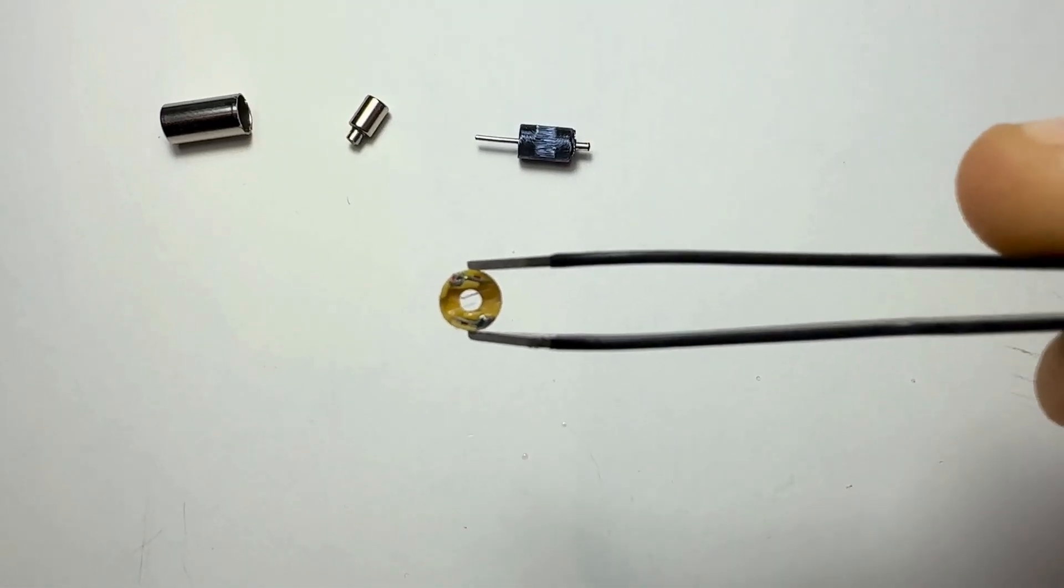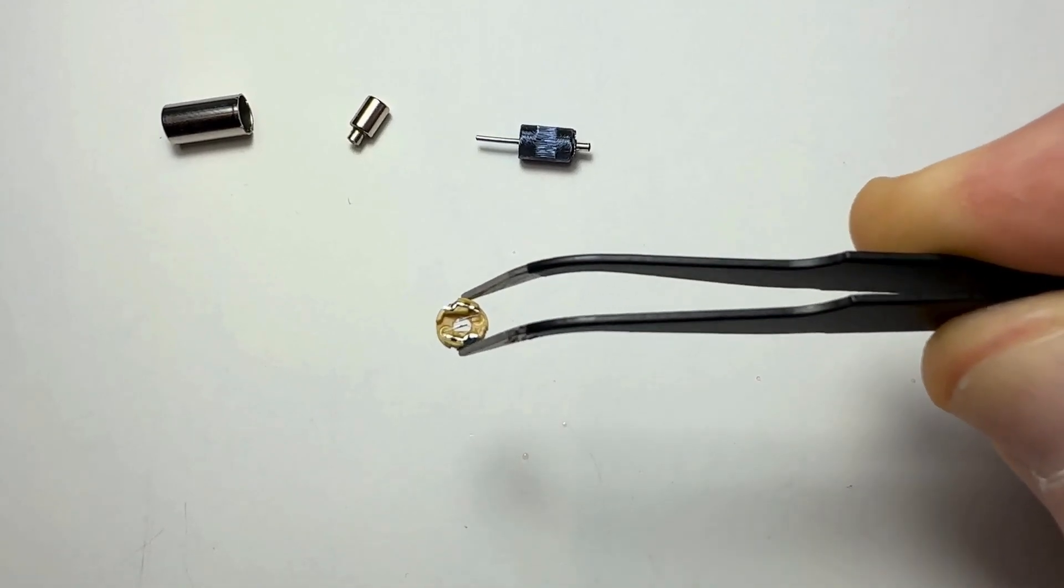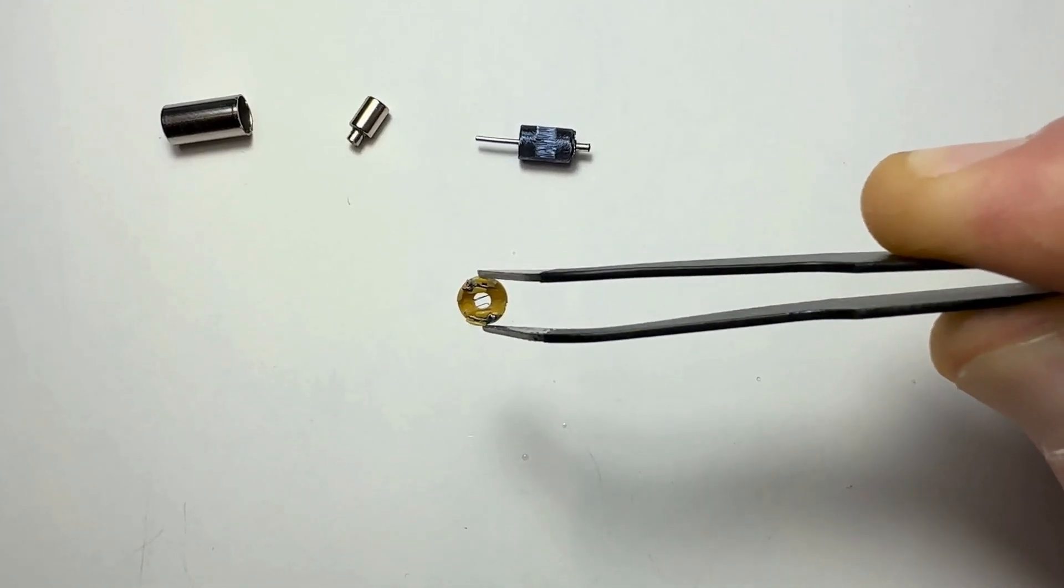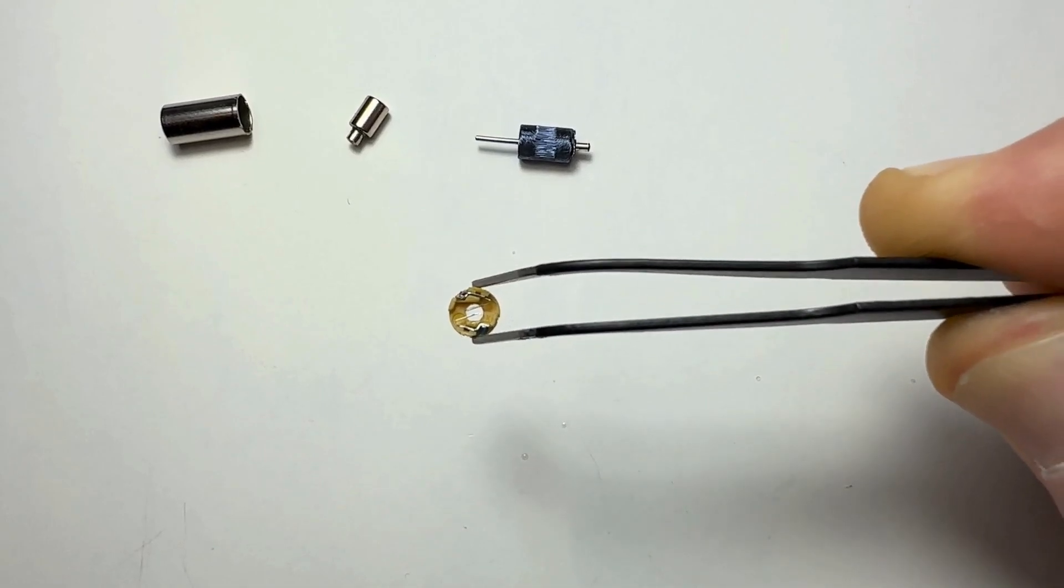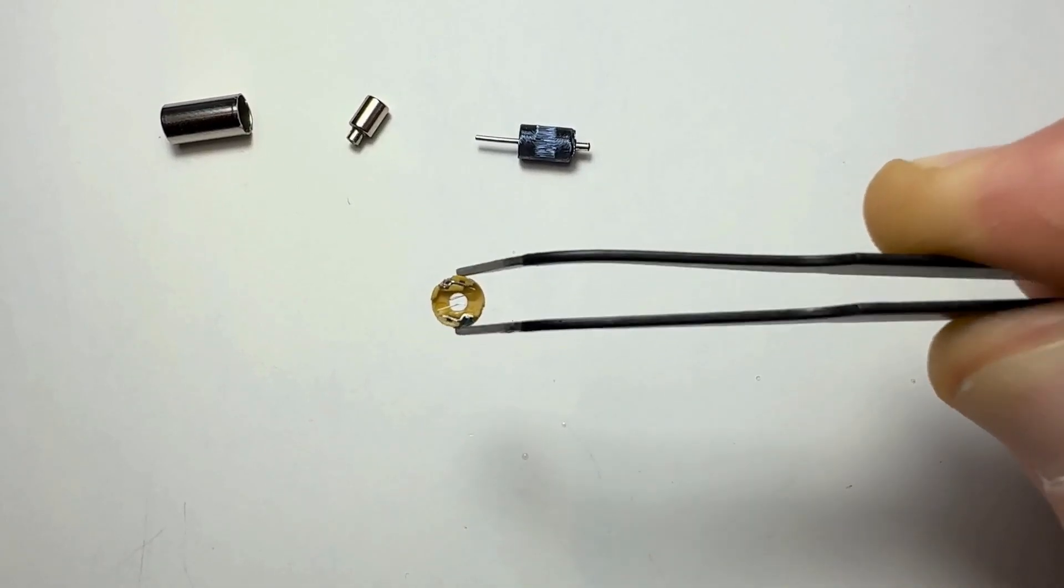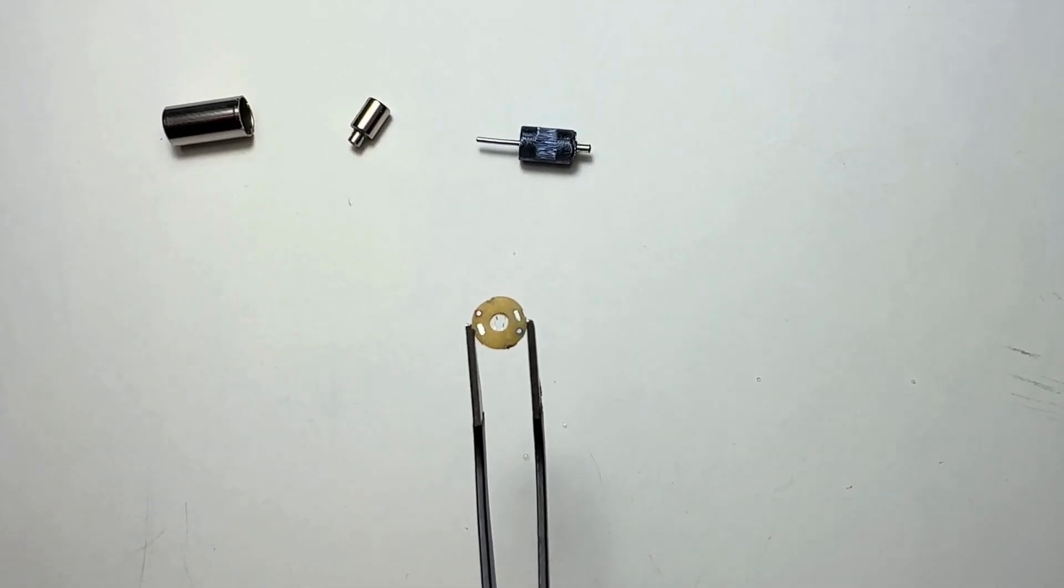This section involves the brushes. They maintain electrical contact with the commutator, facilitating the transfer of power from the stator to the rotating part, the rotor. These brushes are designed to minimize friction and wear.